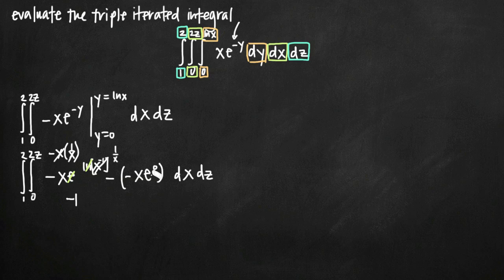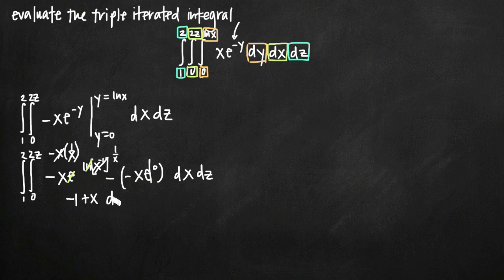For the second term, e to the 0 is just 1, so it goes away. We have minus a negative x, which is plus x. So our simplified integrand is negative 1 plus x, then dx dz.